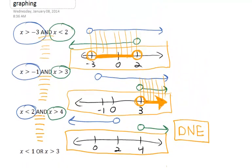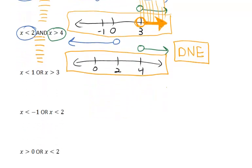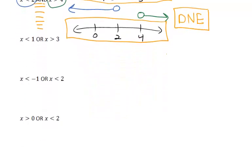So those are kind of the three possible results that you could get from an and. You're looking for the overlap, the smaller of the graphs, what works for both of them. With or, we're just looking for what works in either the first one or the second one or both.